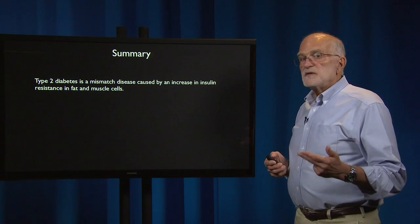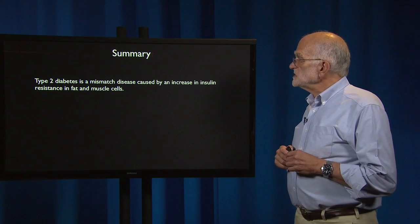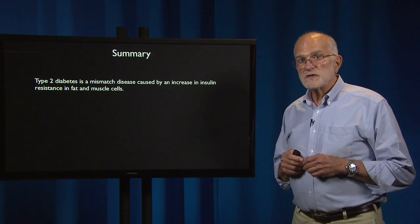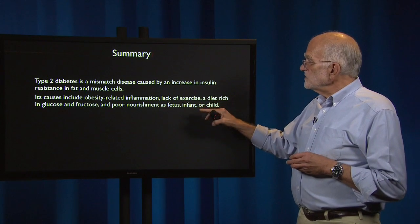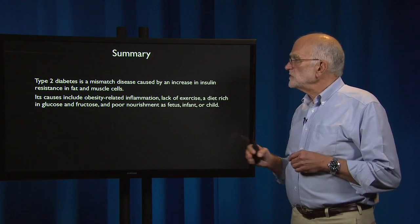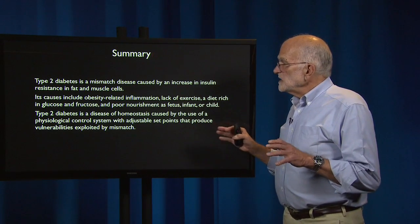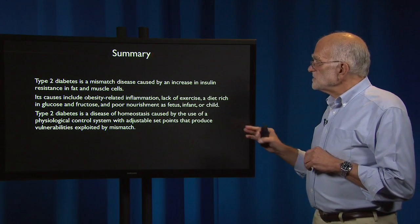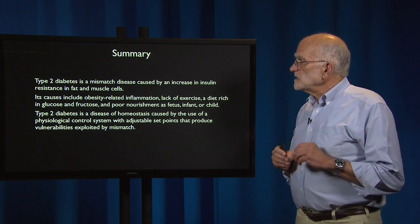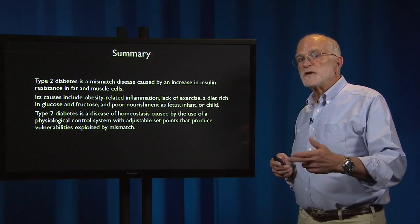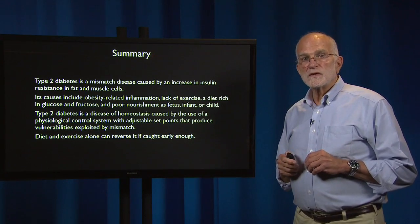So type 2 diabetes, like obesity, is a complex disease with multiple causes. It's a mismatch disease caused by an increase in insulin resistance in fat and muscle cells. Its causes include obesity-related inflammation, lack of exercise, a diet rich in glucose and fructose, and poor nourishment as a fetus, infant, or child. Type 2 diabetes is a disease of homeostasis caused by the use of a physiological control system that has adjustable set points that produce vulnerabilities exploited by mismatch. Diet and exercise alone can reverse it if it is caught early enough.